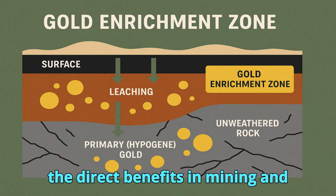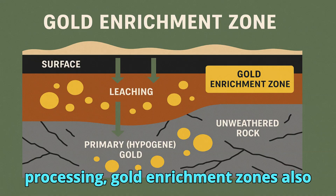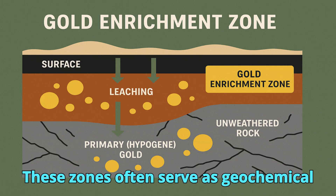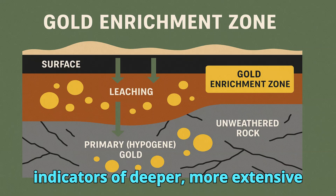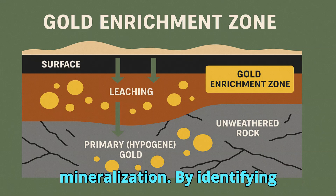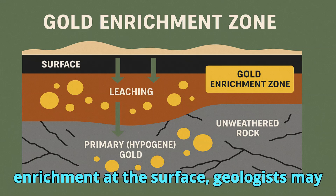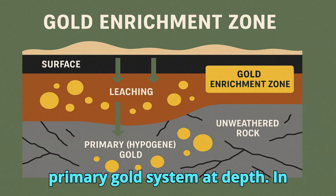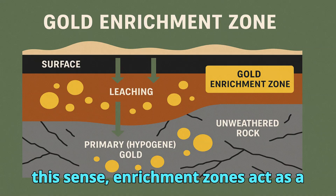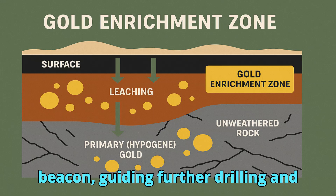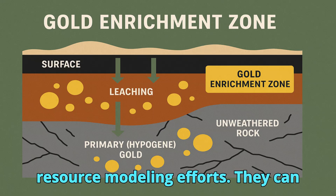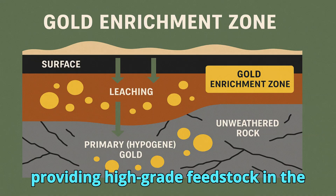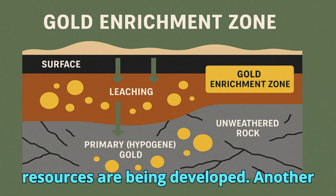Beyond the direct benefits in mining and processing, gold enrichment zones also hold strategic exploration value. These zones often serve as geochemical indicators of deeper, more extensive mineralization. By identifying enrichment at the surface, geologists may infer the presence of a larger, concealed primary gold system at depth. In this sense, enrichment zones act as a beacon, guiding further drilling and resource modeling efforts. They can also extend the life of a mine by providing high-grade feedstock in the early years of operation while deeper resources are being developed.